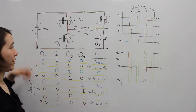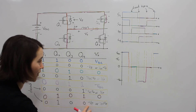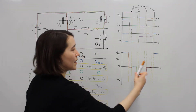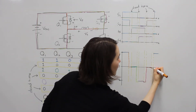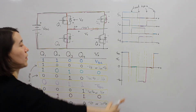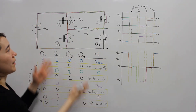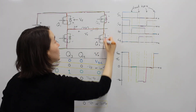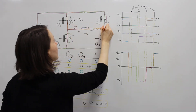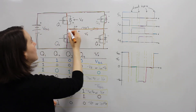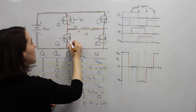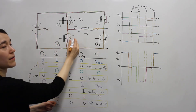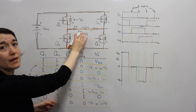Transitioning from the fourth back to the first state we get negative VF during the dead time, just a little bit negative, and then we go up to VDC. On the diagram Q2 is on so we go through the main switch of Q2, through the load, and then through this body diode back around. The body diode voltage is what's seen over the load during this dead time.